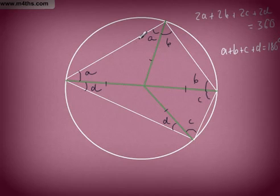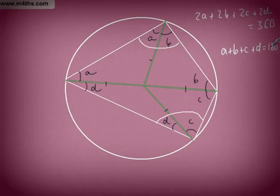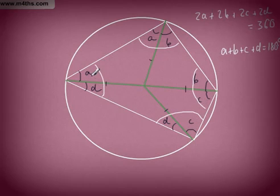Split this whole thing by 2: A plus B plus C plus D is equal to 180. Now, if you carefully study, I've got an A plus a B here and a C plus a D there. A plus B plus C plus D is equal to 180 degrees. And if we look here: A, D, B and C — A plus B plus C plus D equals 180. So, that's sorted.